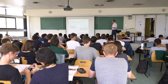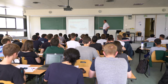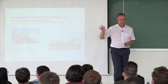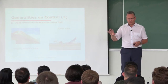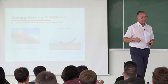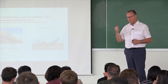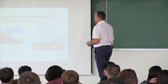Just a few examples: in the transportation field you have the magnetic levitation train from Germany, with implementation in China. And the Airbus A380 — without control, this plane cannot fly. Many planes cannot fly without control; they are unstable systems. So you need to improve the behavior, stabilize your system, and provide good performances. This is the goal of control.